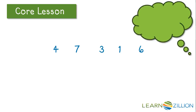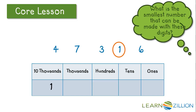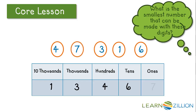Let's use those same digits, but this time ask: what is the smallest number that can be created with these digits? Again, using our place value chart, if we want to make the smallest number, we need to put the smallest digit in the largest place, which would be the ten thousands. Then we'll take the next smallest, which is a 3, and put it in the thousands. Then a 4 in the hundreds, a 6 in the tens, and a 7 in the ones. And we've created 13,467. If we want to make the smallest number possible, we want to put the smallest number in the place that has the largest value.